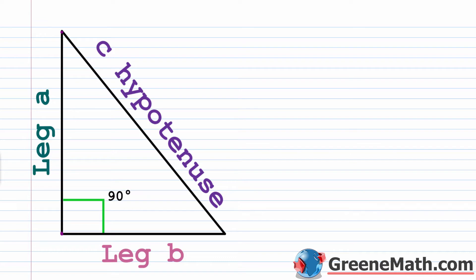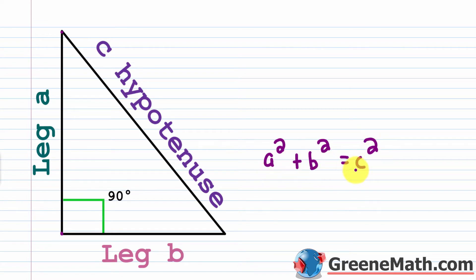One of the immediate applications of square roots is the ability to find the distance between two points on the coordinate plane using the Pythagorean theorem — or as your book might call it, the Pythagorean formula. It's a pretty famous formula, so even if you haven't taken geometry yet, you've probably come across it at some point.